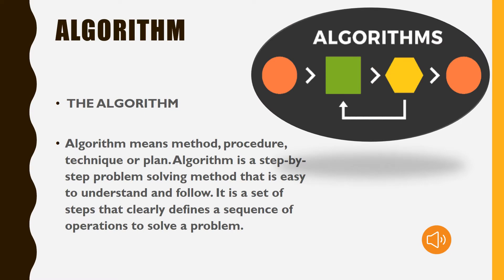So students, what is an algorithm? Algorithm means method, procedure, technique, or plan. An algorithm is a step-by-step problem solving method that is easy to understand and follow. It is a set of steps that clearly defines a sequence of operations to solve a problem — a step-by-step or part-by-part procedure to solve a problem — and we have to create one sequence which is called an algorithm.